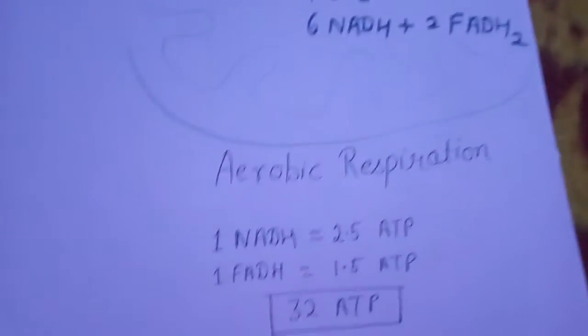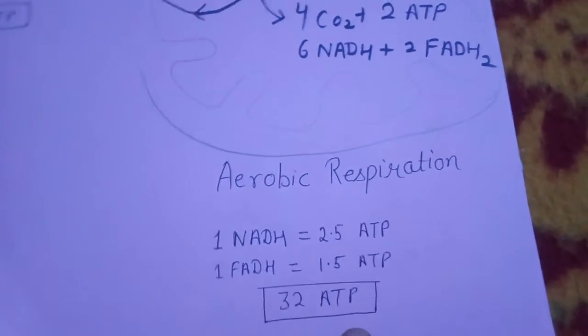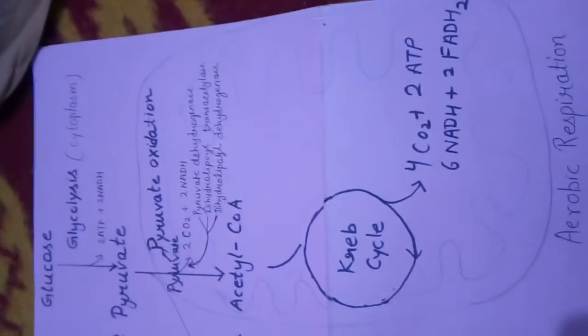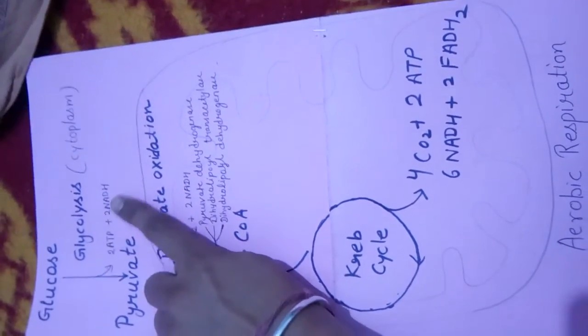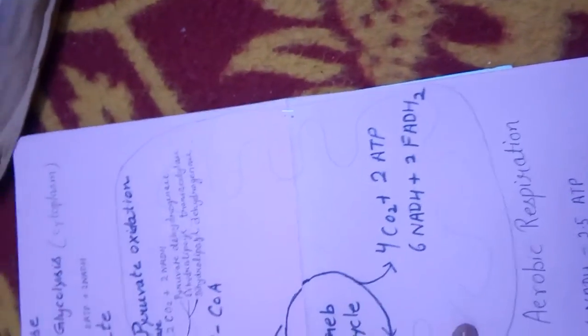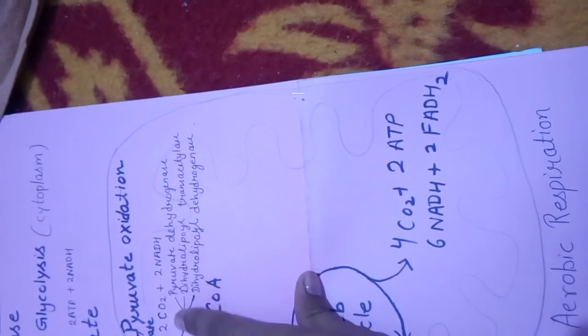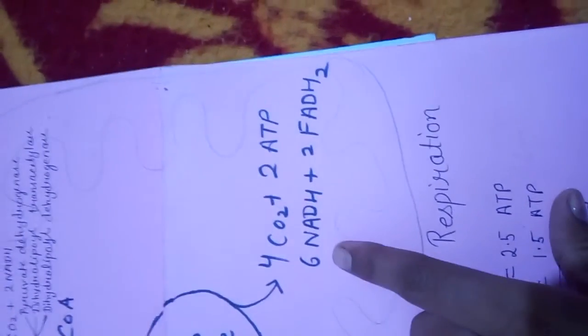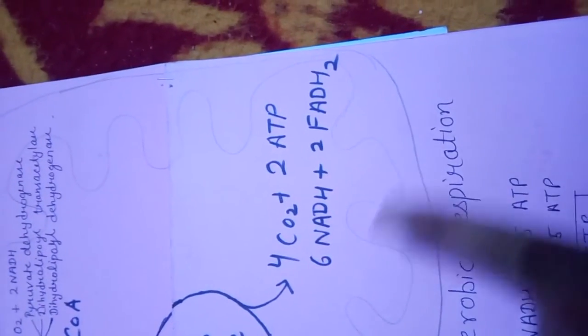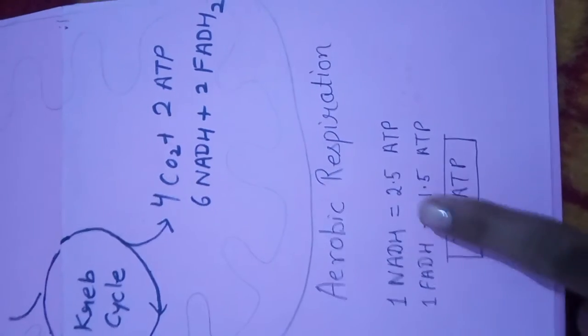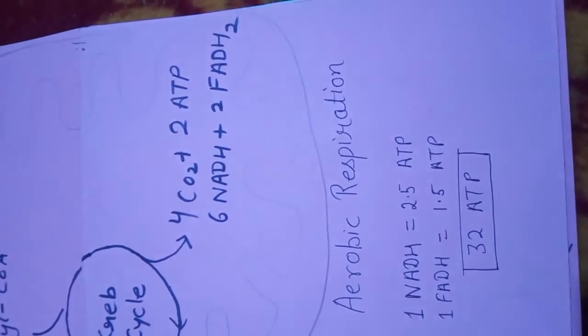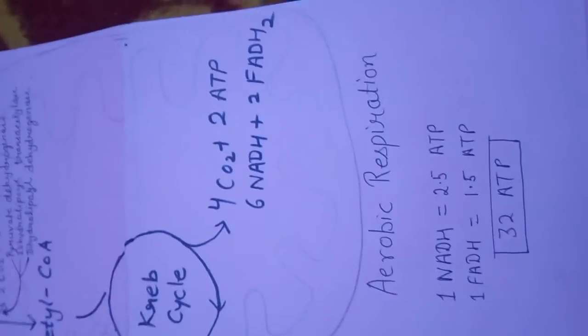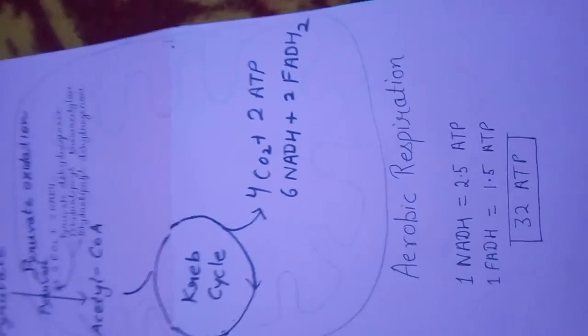In aerobic respiration, 32 molecules of ATP are produced. From glycolysis: two ATP and two NADH. From pyruvate oxidation: two NADH. From the Krebs cycle: six NADH, two FADH2, and two ATP. When we total all these — since one NADH equals 2.5 ATP and one FADH2 equals 1.5 ATP — adding everything gives 32 ATP.